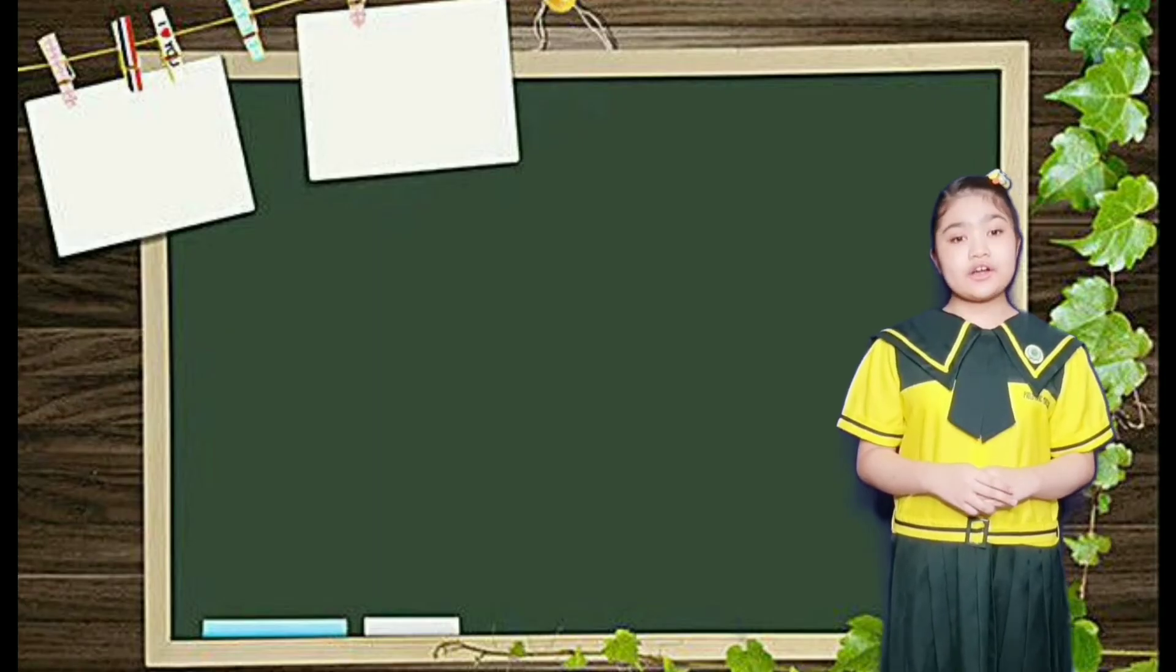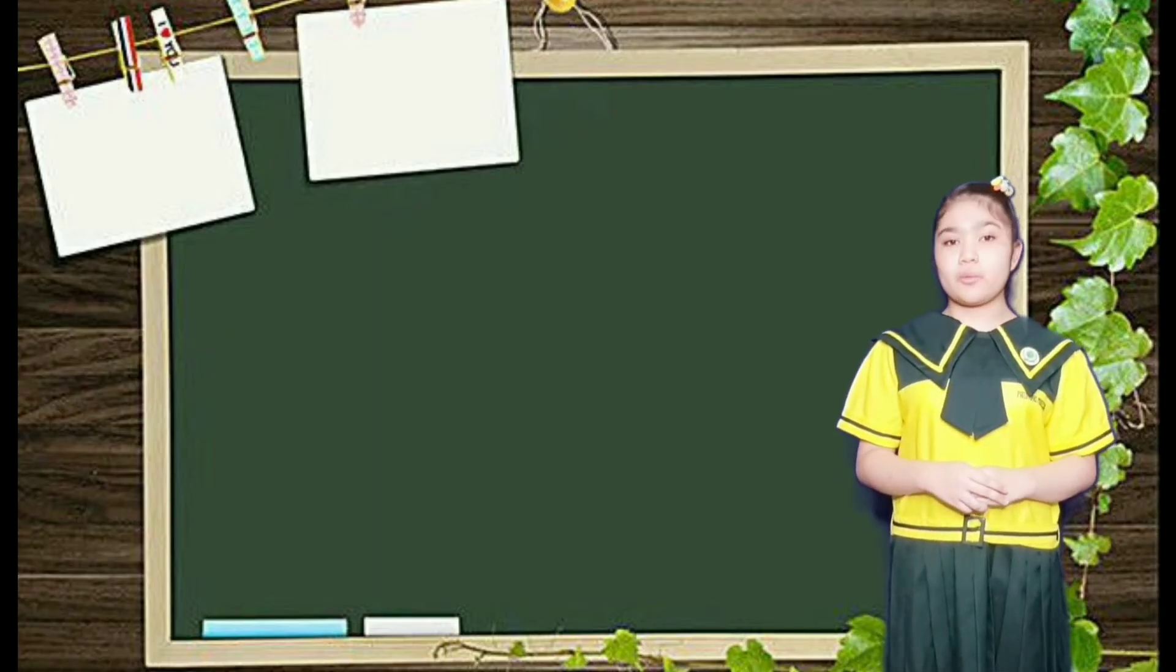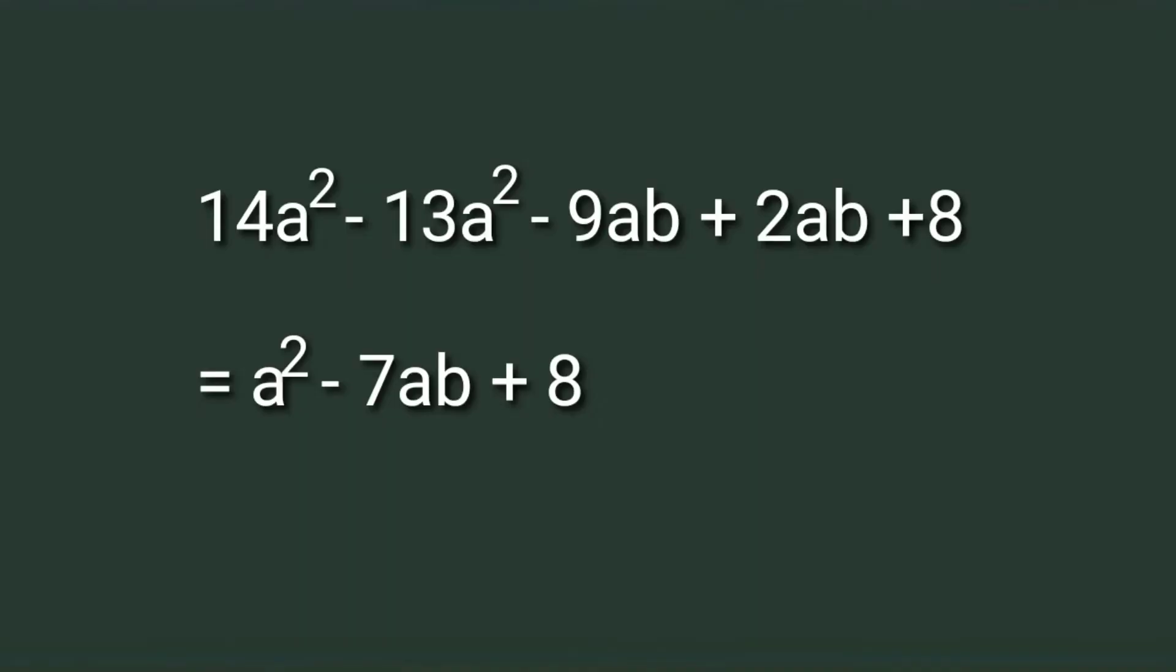You can also simplify expressions by combining like terms mentally. 14a squared minus 13a squared minus 9ab plus 2ab plus 8 equals a squared minus 7ab plus 8.